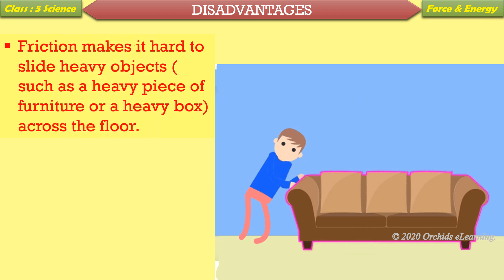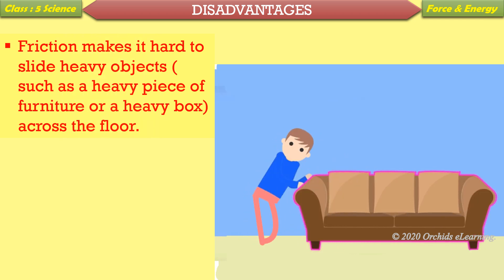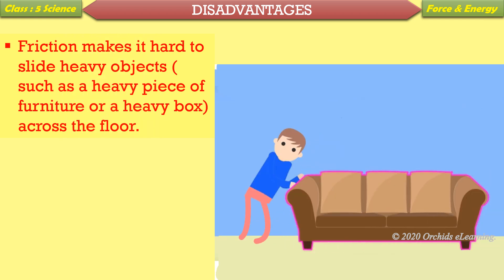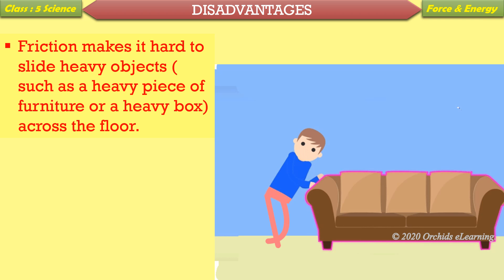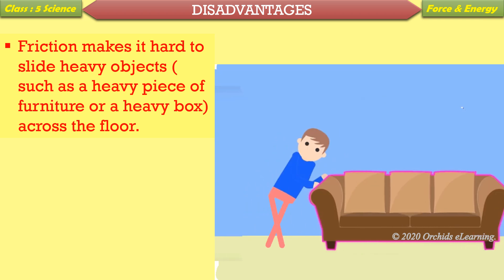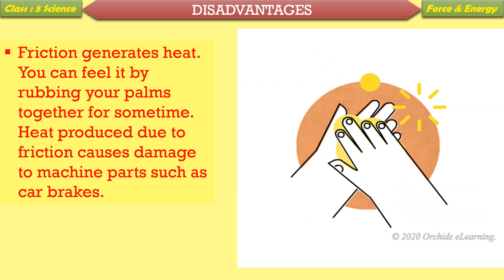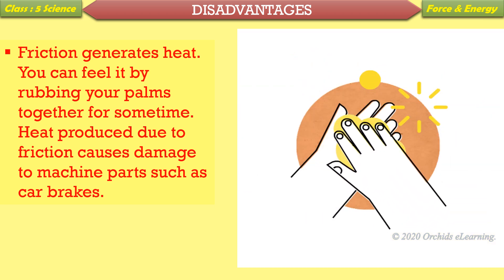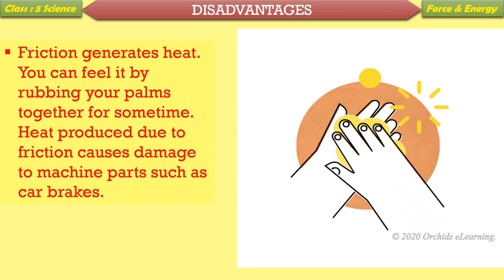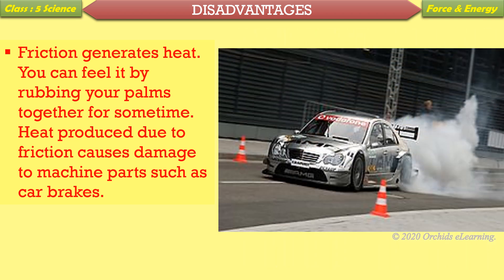Friction makes it hard to slide heavy objects such as heavy furniture or a heavy box across the floor. Friction also generates heat — you can feel it by rubbing your palms together for some time. Heat produced due to friction causes damage to machine parts such as car brakes.